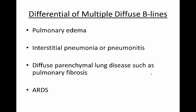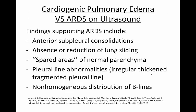If a patient presents with multiple diffuse beelines evident on ultrasound, there could be many different differential diagnoses, including pulmonary edema from various causes, interstitial pneumonia or pneumonitis, and diffuse parenchymal lung disease such as pulmonary fibrosis or ARDS. Ultrasound findings that support the diagnosis of ARDS include anterior subpleural consolidations, absence or reduction of lung sliding, spared areas of normal parenchyma, pleural line abnormalities like irregular thickened fragmented pleural lines, and non-homogeneous distribution of beelines.